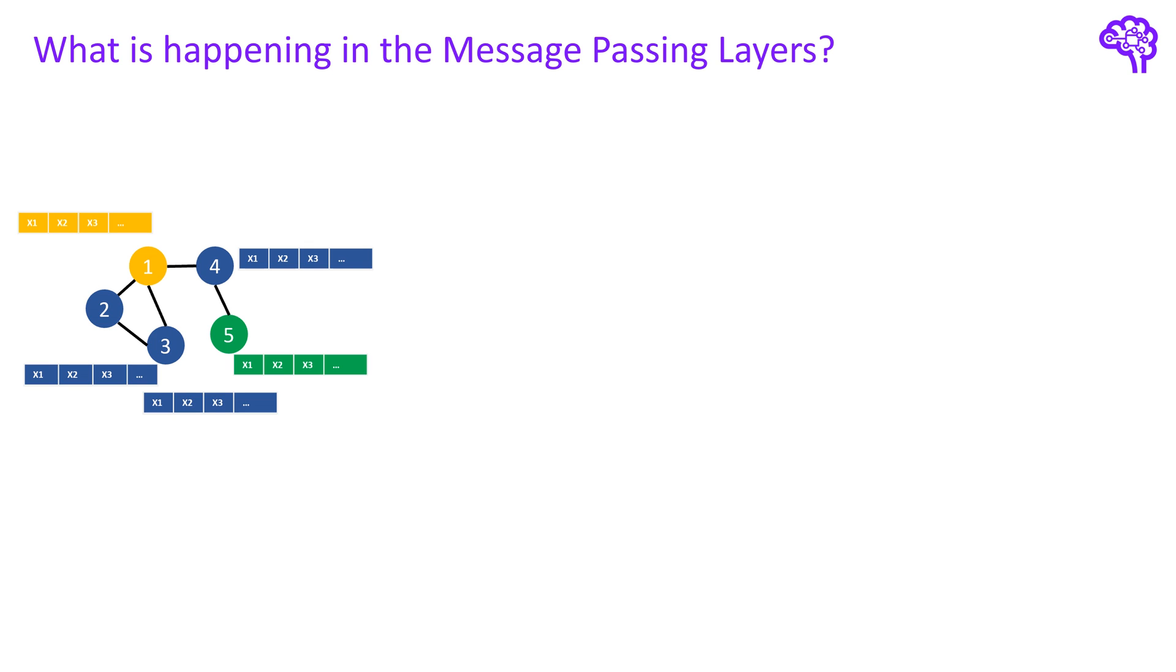Let's assume this is our input graph in the following. We see that there is one yellow node with the number one with a yellow node feature vector or state. This is the node we will focus on in the following. To update the node state we collect the information of the direct neighbors which means we perform the message passing. What we end up with is the information about our current node state and the information about our neighbors node states. These states are usually denoted with H. Currently we are in time step K.